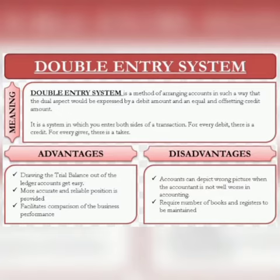What is a double entry system? Double entry system is a method of arranging accounts in such a way that the dual aspect would be expressed by a debit amount and an equal and offsetting credit amount. It is a system in which you enter both sides of a transaction.